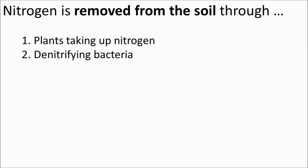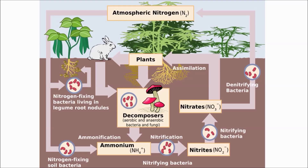So nitrogen is lost from the soil through plants taking it up and through denitrifying bacteria. Let's put all that together now. This diagram has a little more detail: nitrifying bacteria can convert ammonia into nitrites, and these are further oxidized into nitrates which plants can use. Lightning is left out of the diagram as it has a very small effect on the nitrogen cycle. So there you have it — nitrogen atoms existing in different forms, going around and around: that's the nitrogen cycle.